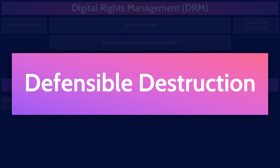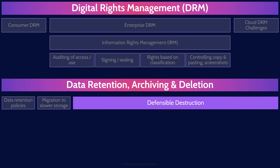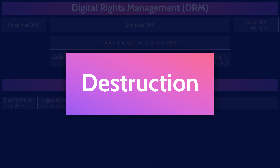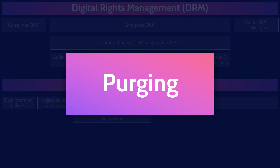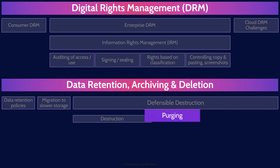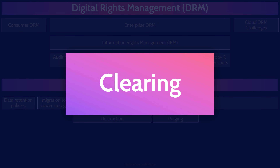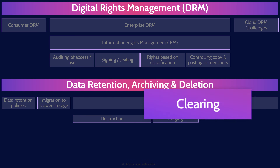There are many ways to destroy data, grouped into three main categories. The first and best category is destruction, which means physically destroying the media the data is stored on. Purging is the next best — using logical or physical techniques to sanitize data so it cannot be reconstructed. Finally, the worst category is clearing, which uses logical techniques to sanitize data to a level where it may not be reconstructed. We obviously want destruction or, failing that, purging. Clearing is not ideal.